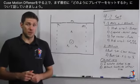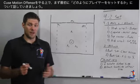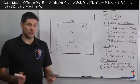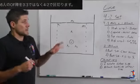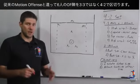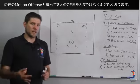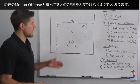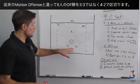The first thing we need to discuss when talking about the Cuse offense is how our players are set up. Contrary to traditional motion offenses, we don't have a group of three and another group of three. We actually have a group of four and a group of two.